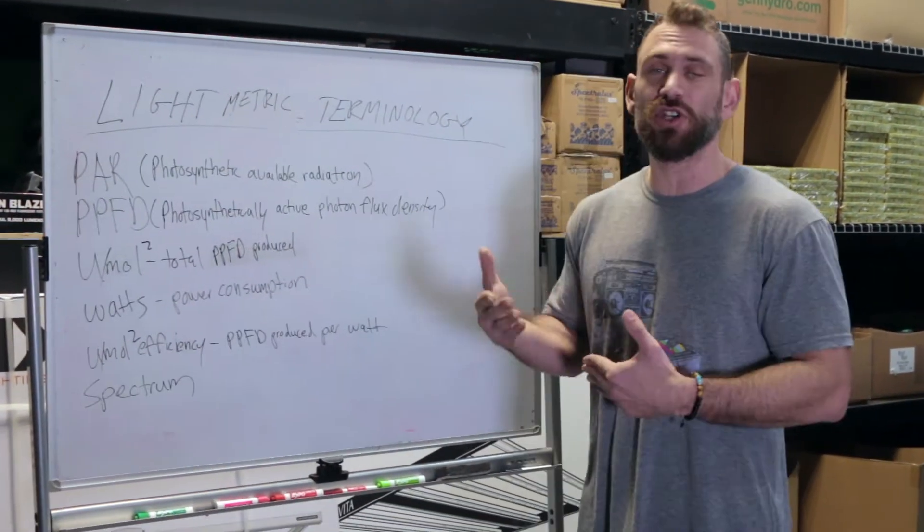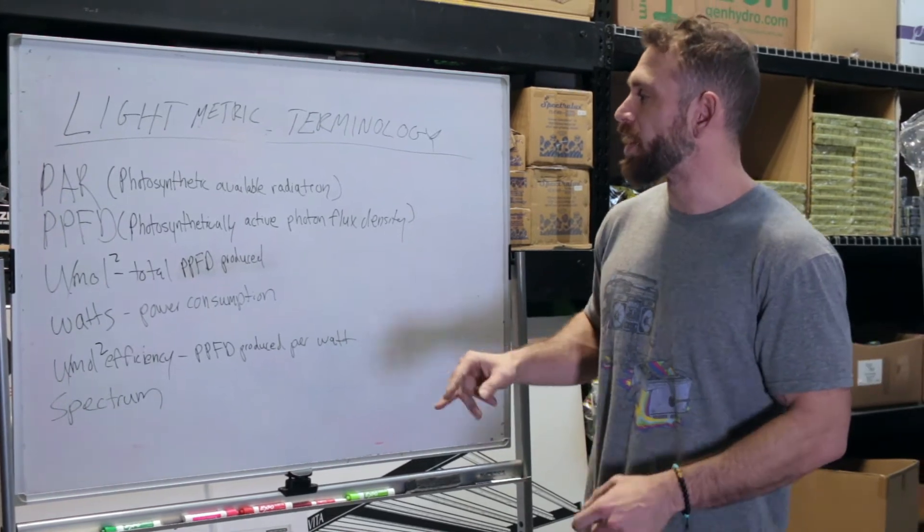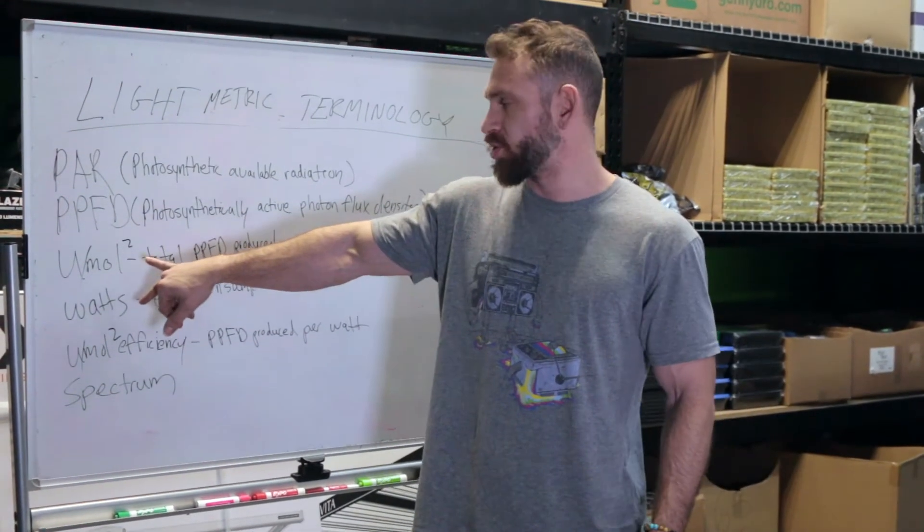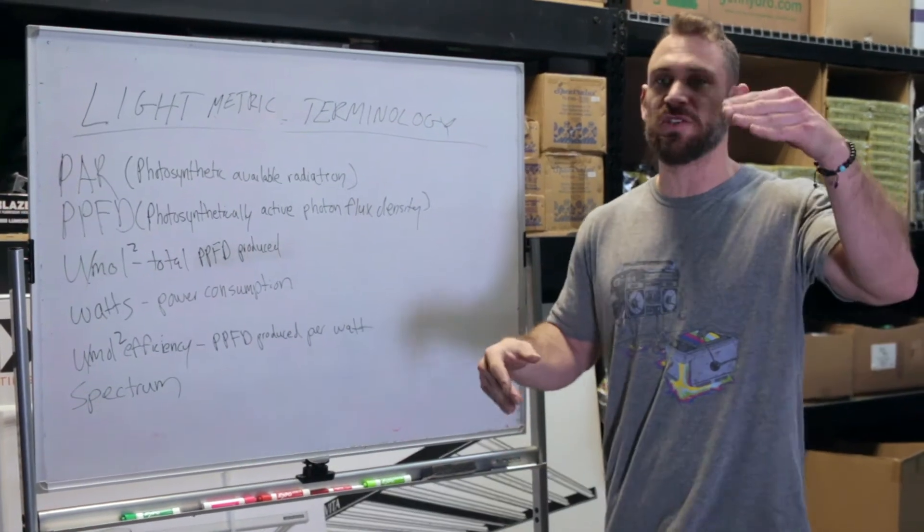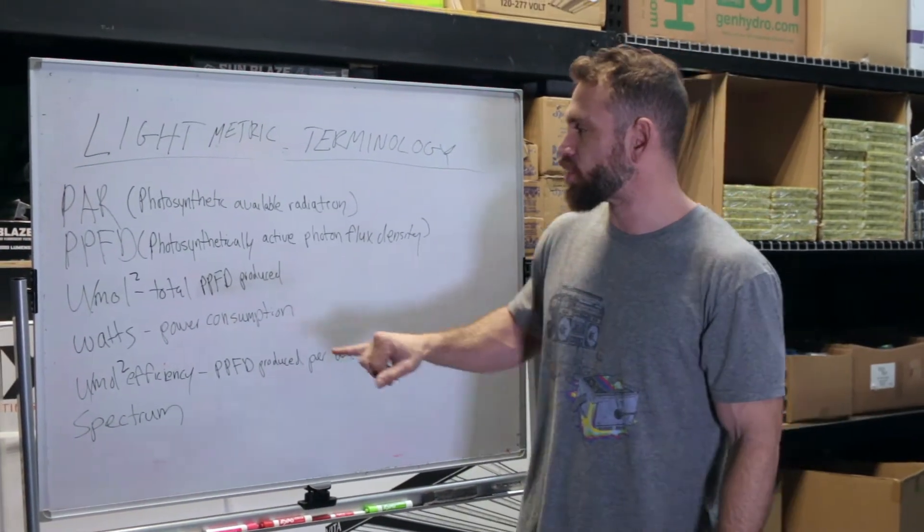PPFD or PAR, they're used interchangeably in our business, are going to be measured by U-moles squared. So when you're looking at a number on a PAR meter, 500, 600, 700, that is referring to the U-moles.